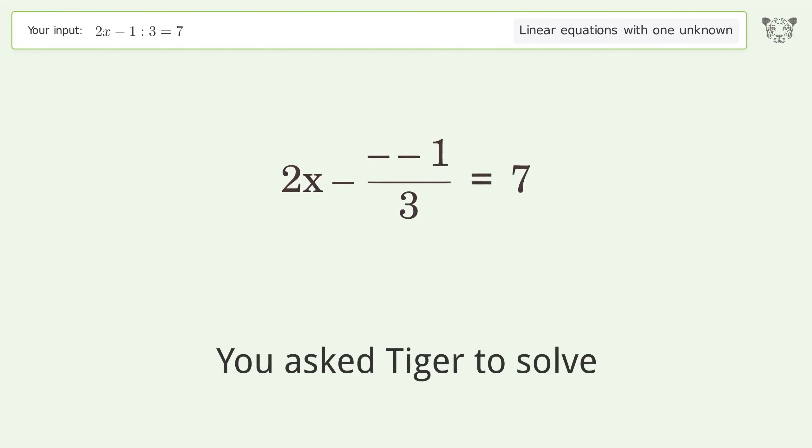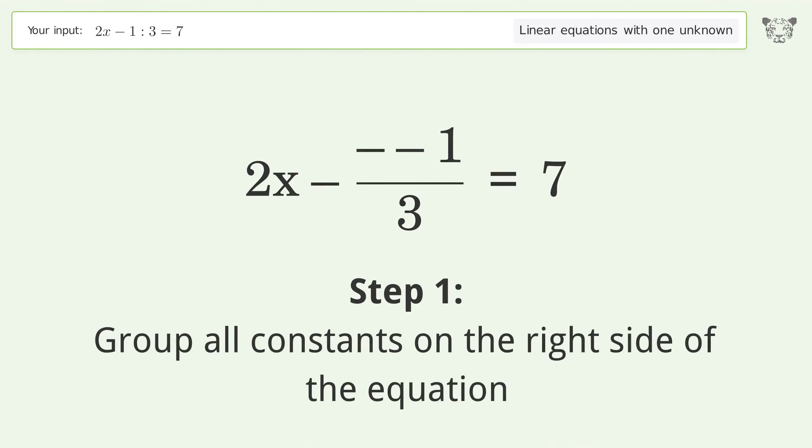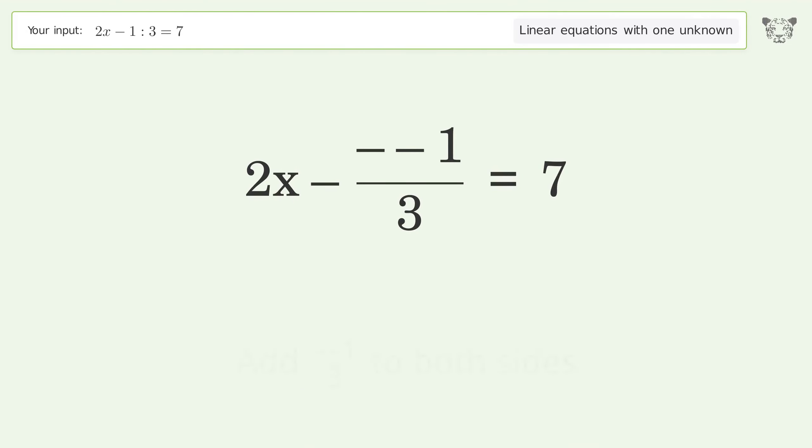You asked Tiger to solve this. This deals with linear equations with one unknown. The final result is x equals 11 over 3. Let's solve it step by step. Group all constants on the right side of the equation. Add negative 1 over 3 to both sides.